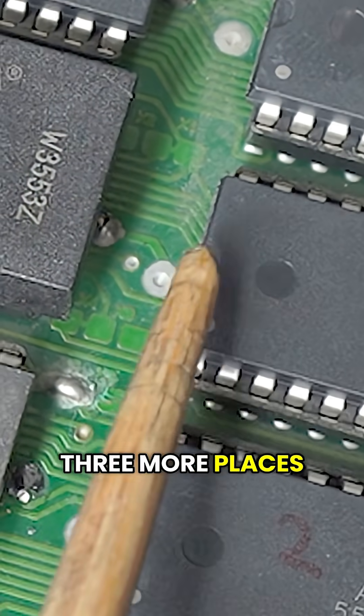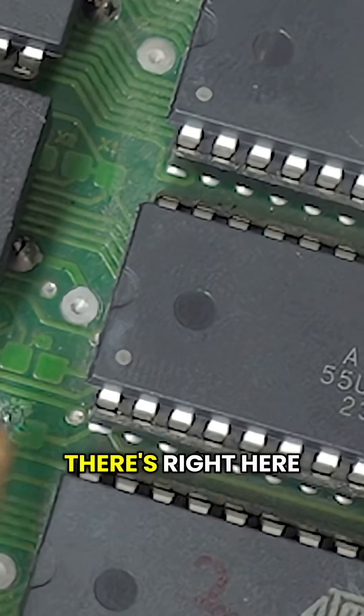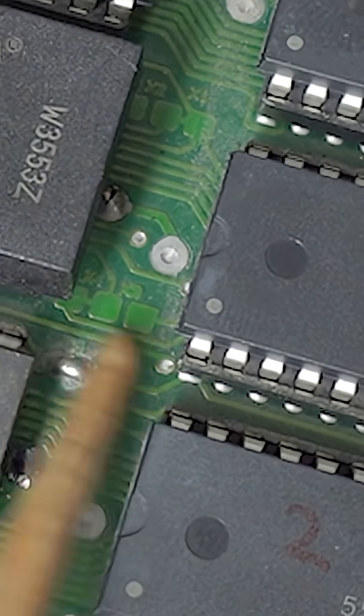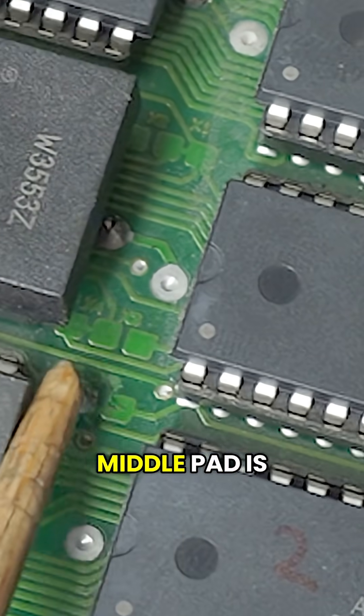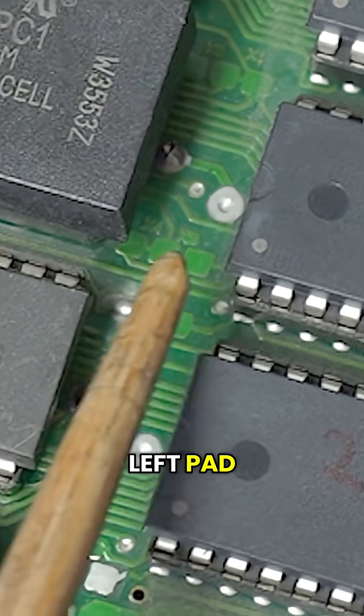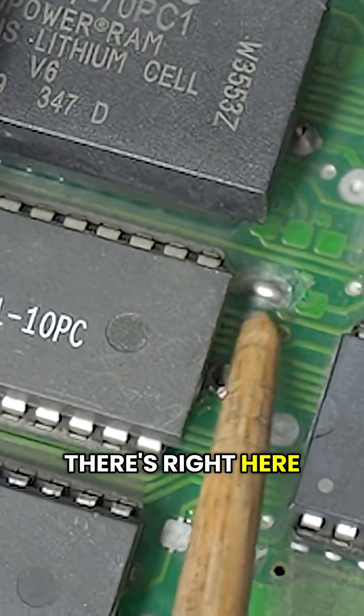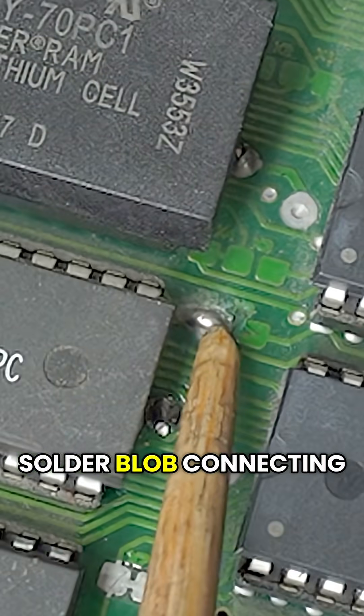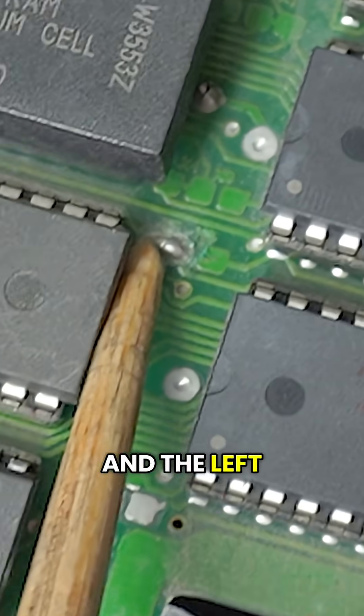And then there's three more places where this happens. There's right here, and you can see that the middle pad is connected to the left pad. There's right here, where there's a solder blob connecting the middle pad and the left pad.